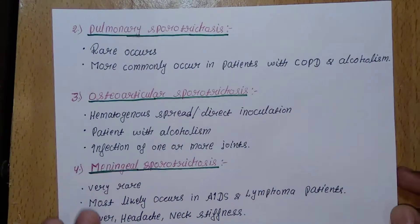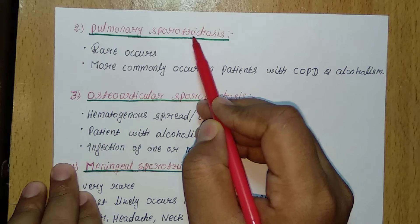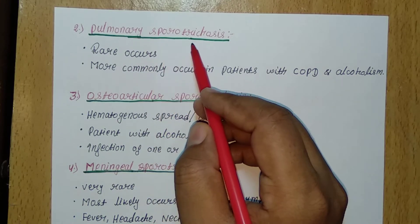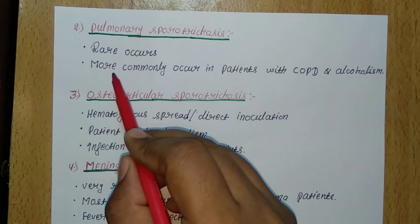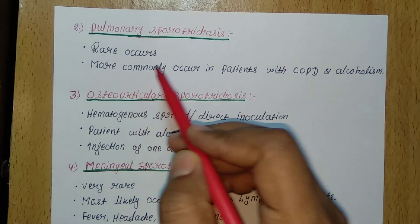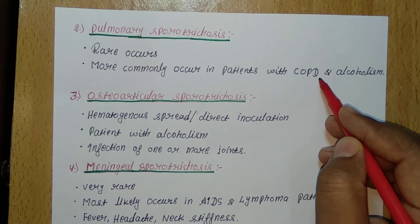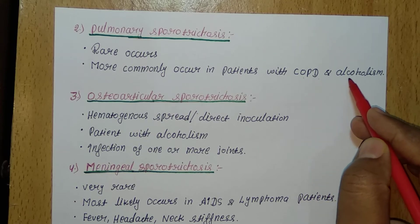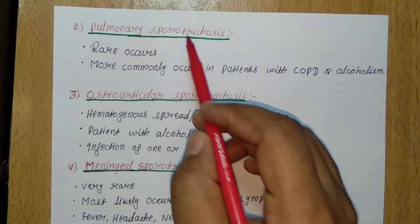The second type is pulmonary Sporotrichosis, which is rare. If it occurs, it most commonly affects patients who have chronic obstructive pulmonary disease and alcoholism. Patients with COPD and alcoholism are mostly affected by pulmonary Sporotrichosis.